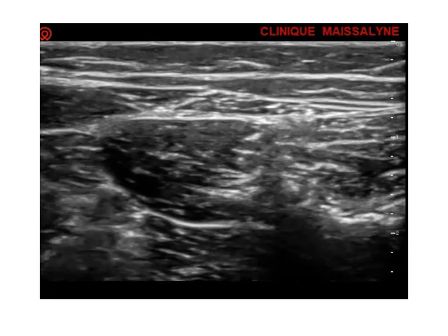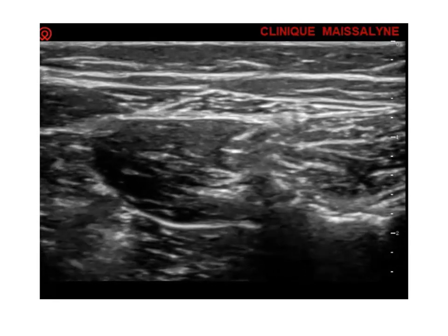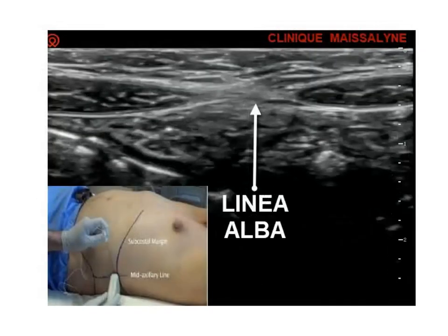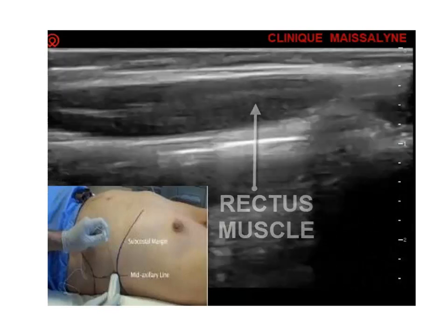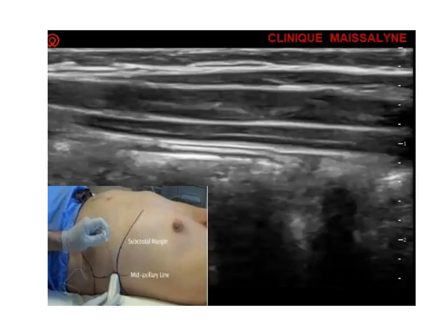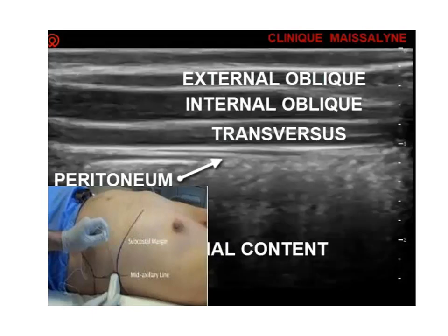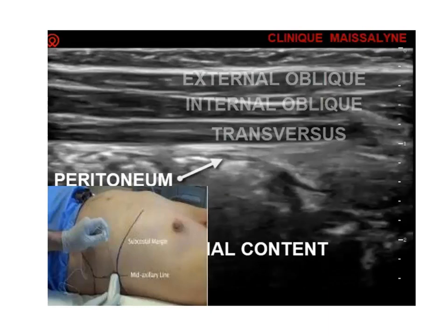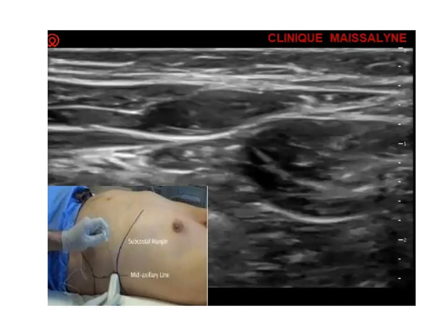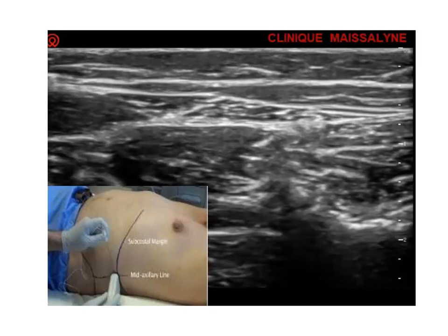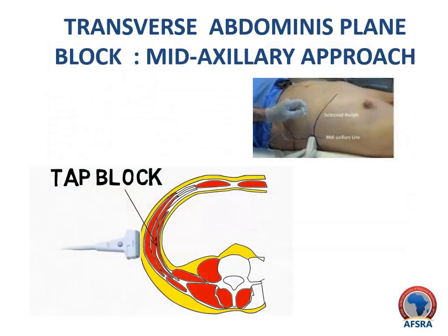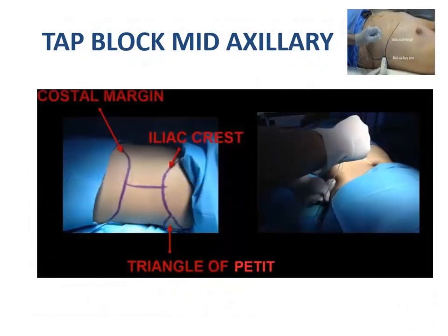In the midaxillary approach, the TAP is identified close to the midaxillary line. The transducer should be placed in the midaxillary line between the iliac crest and the subcostal margin. The transversus abdominis layer is usually the most hypoechoic of the muscle layers, with the external oblique muscle being the most superficial. Tilt may be applied to the transducer to better visualize the fascial layers. The needle is advanced into the TAP and local anesthetic is injected using an in-plane needle technique. Injection of the local anesthetic into the TAP separates the muscle layers.